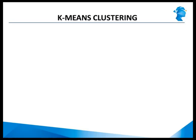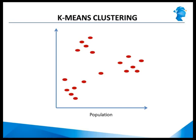Let's take an example to see how this algorithm works. We have a population mapped on two different variables, so we have a set of observations plotted along these two variables on a graph. This is a two-dimensional example taken for the sake of understanding. The same logic is then applied across n dimensions. Let's assume we want three different clusters.